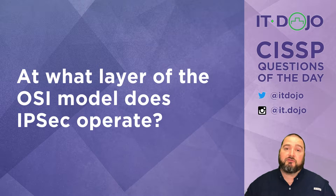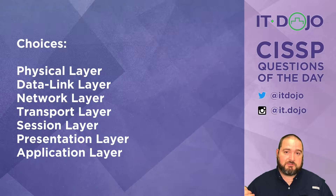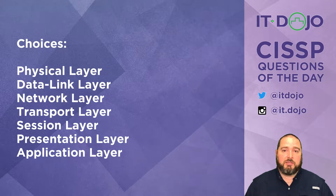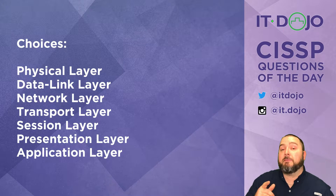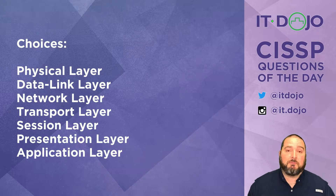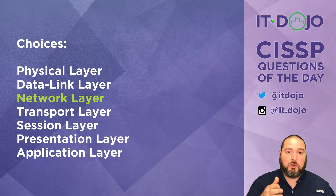At what layer of the OSI model does IPsec operate? Go ahead and contemplate it. Let's break it down. IPsec is a technology that operates at the network layer of the OSI model. That's just for reference and understanding what technologies are operating at what particular layers.